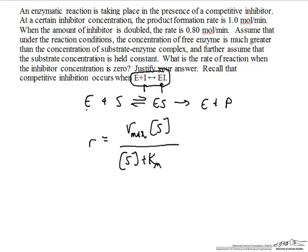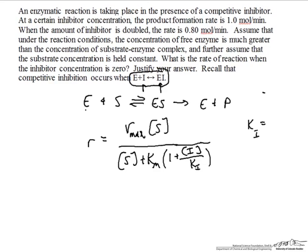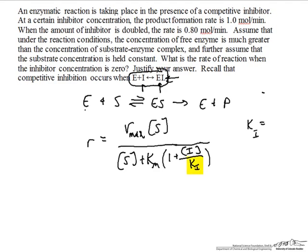Furthermore, we can modify this in terms of the effect of an inhibitor. In competitive inhibition, the rate expression follows this kind of relationship where changes in the inhibitor concentration affect the second term in the denominator with the Michaelis constant.